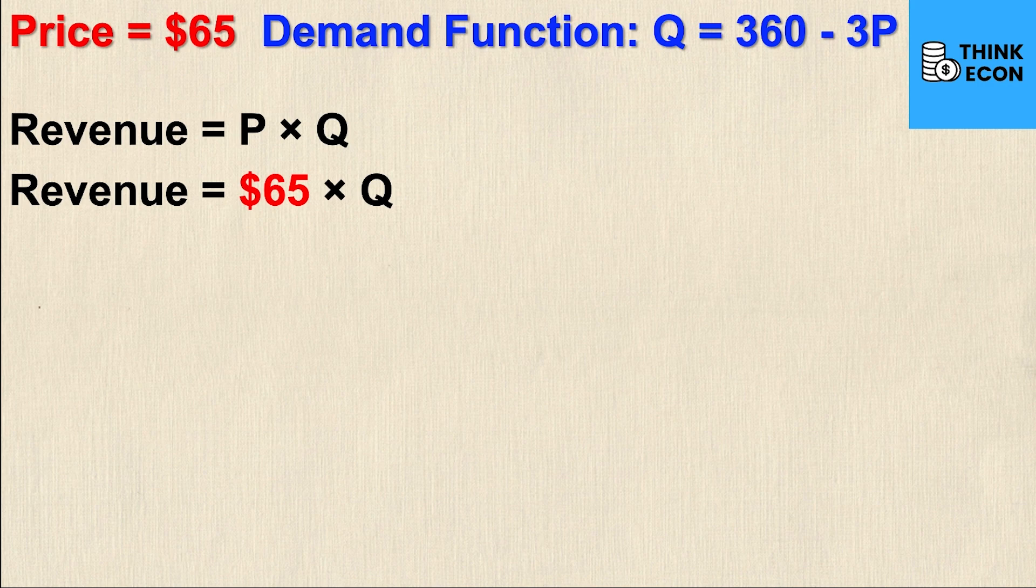Now I don't have the quantity given to me so I actually need to calculate it but it's not difficult to do. So I'm going to take the $65 that's given to me in the question and I'm going to substitute it into the demand function as the P value and if I do that I'm going to get something that looks like this.